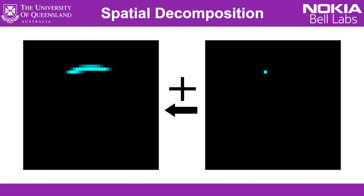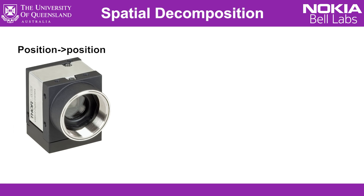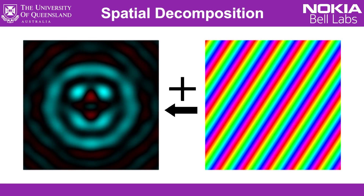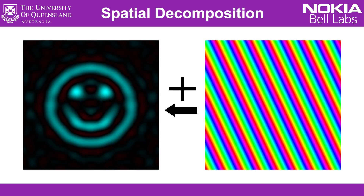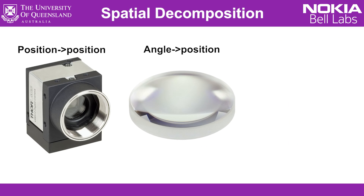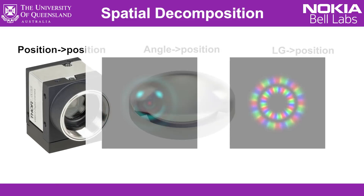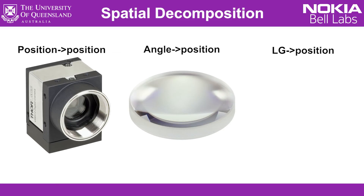Now, if we want to decompose an image into pixels, that's straightforward — you can just use a camera. And if you want to decompose an image into its angle components, that's also straightforward because you can just use a lens. But if you want to decompose a beam into its Laguerre-Gaussian components, you'd have been out of luck because such a device didn't previously exist. It's a bit weird that it didn't exist, because it's such a common and fundamental type of spatial component in beam optics — used in many different applications, but with no device to perform even this basic operation.